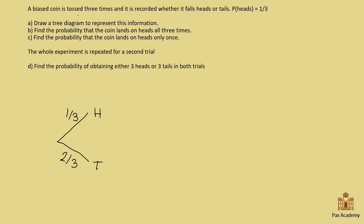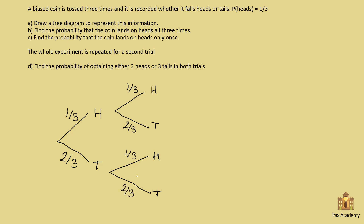Because the coin is tossed three times, we need to go three levels deep on the tree diagram. So this is the first toss. Then it's tossed again — it can either be heads or tails. The probability doesn't change: it's still one-third to get heads and two-thirds for tails. So this would be the second toss.